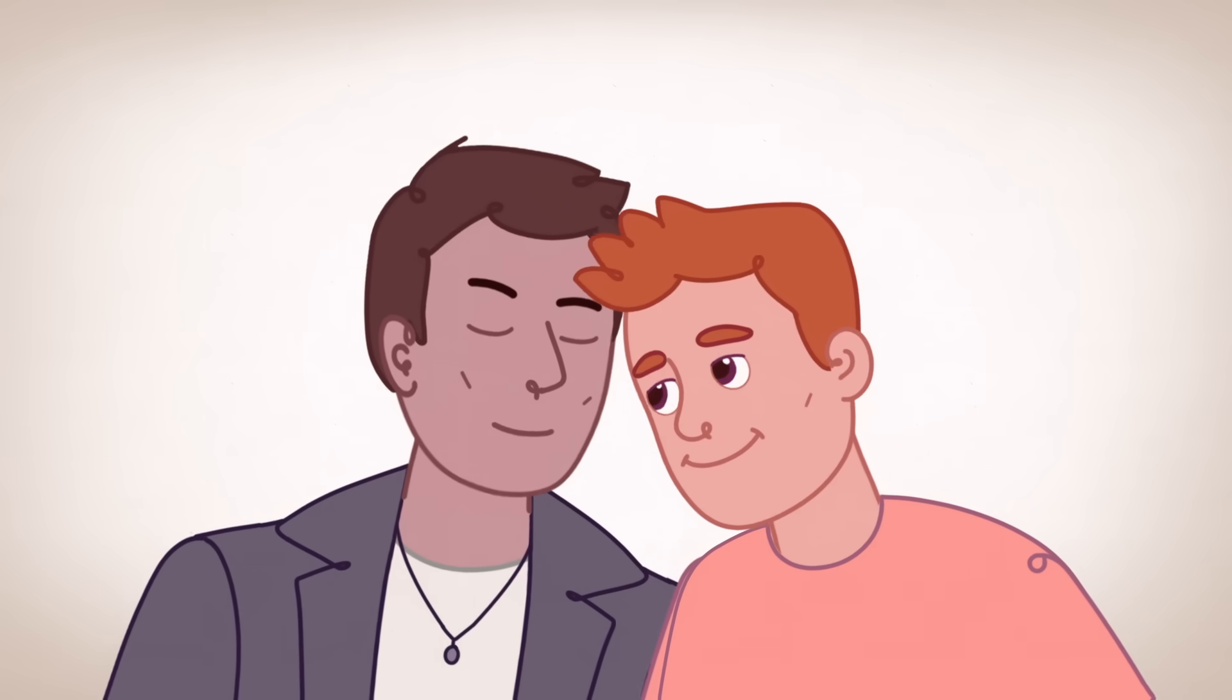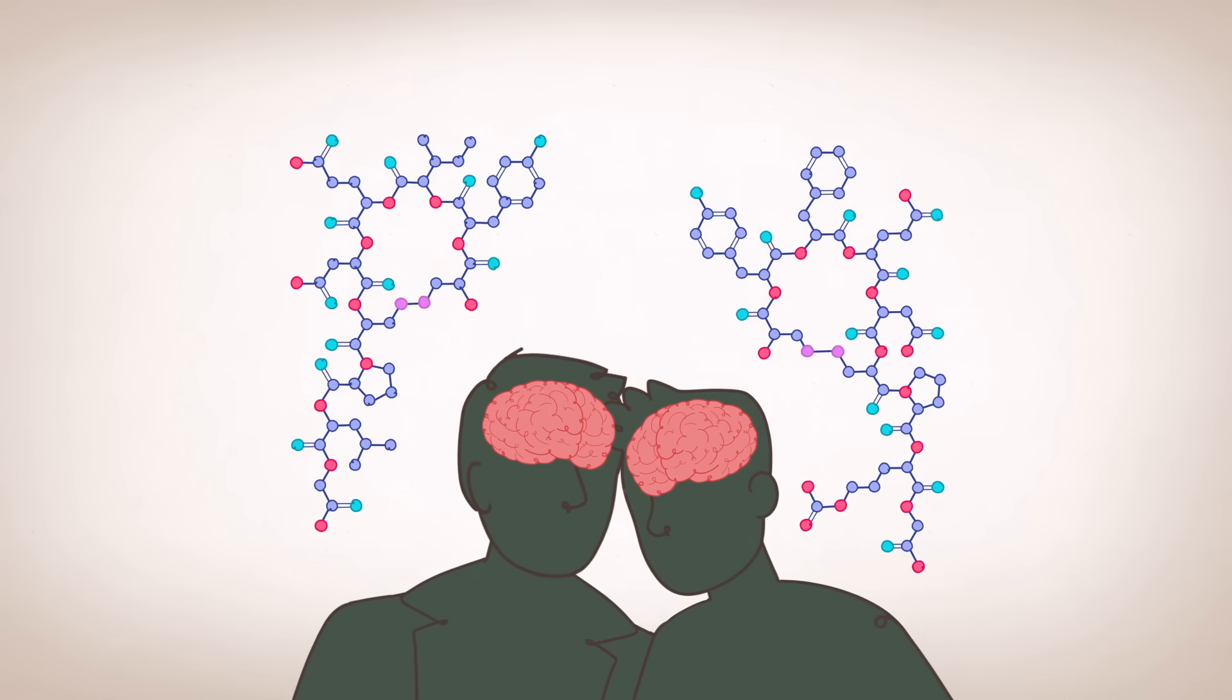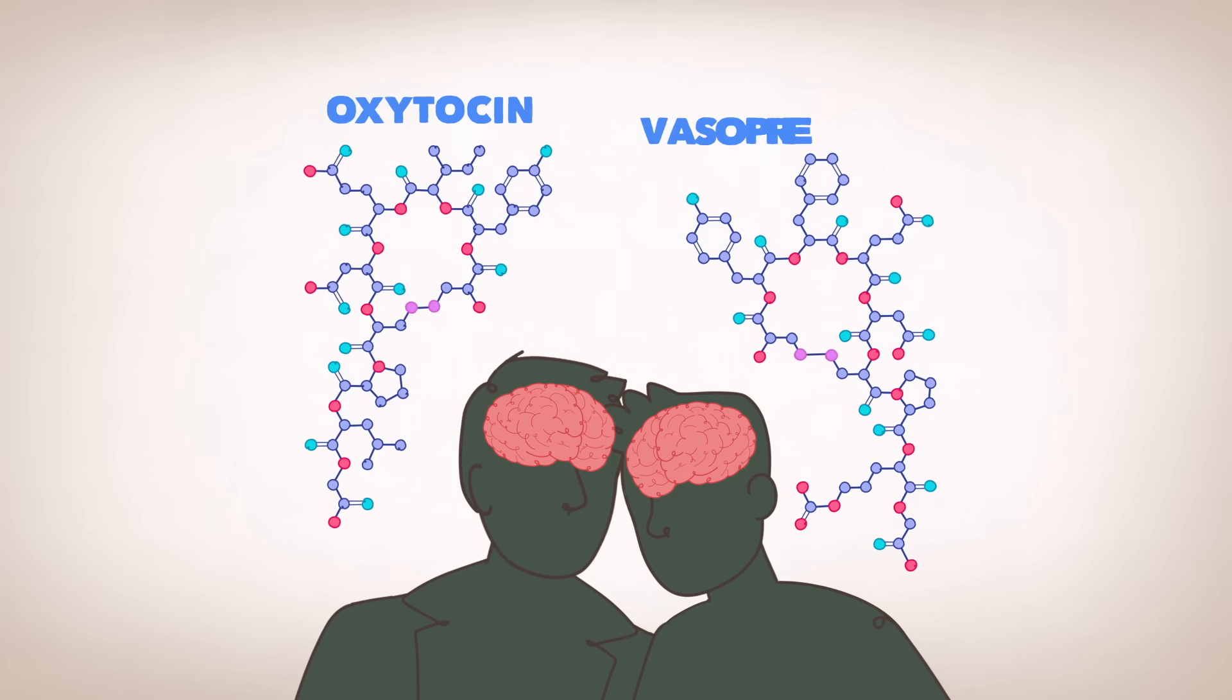As your relationship develops, you may feel more relaxed and committed to your partner, thanks in large part to two hormones: oxytocin and vasopressin.